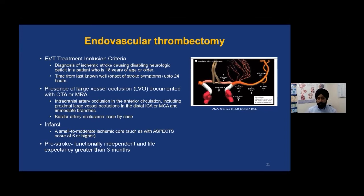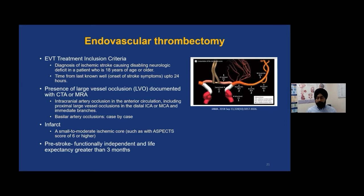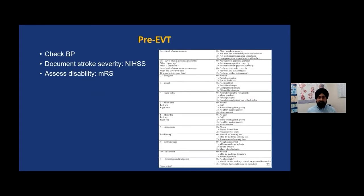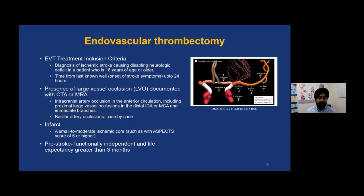The infarct should be small or moderate — meaning there is still a lot of brain that can be saved. Premorbidly, the patient should be independent and life expectancy should be greater than three months — so patients with terminal cancer or who are terminally ill should not be rushed for endovascular thrombectomy. Pre-EVT assessment is similar to pre-TPA: check blood pressure, document stroke severity, and assess disability.